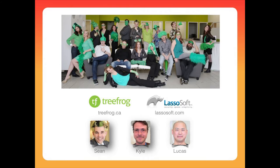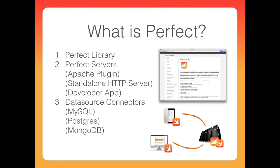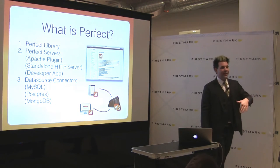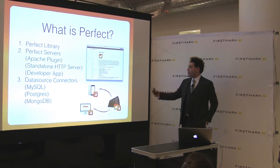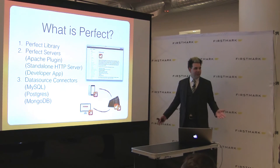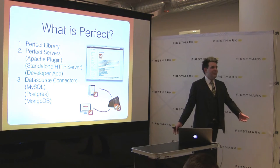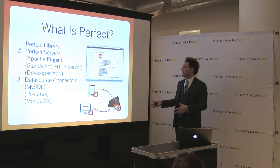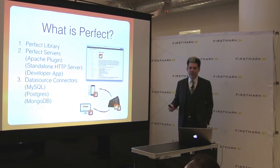Perfect is a full suite of tools for building back-end stuff using Swift. There's a library of all sorts of things — there's also an Apache plugin, we're working on Nginx and IIS so you can use it in a production stack. Instead of Linux, Apache, MySQL, and PHP, you'll use Linux, Apache, Mongo, and Perfect. There's a standalone HTTP server especially for developers to spin something up quickly on its own port. We have a developer app to make it simple for iOS developers, plus classic data source connectors we're releasing on a regular basis.